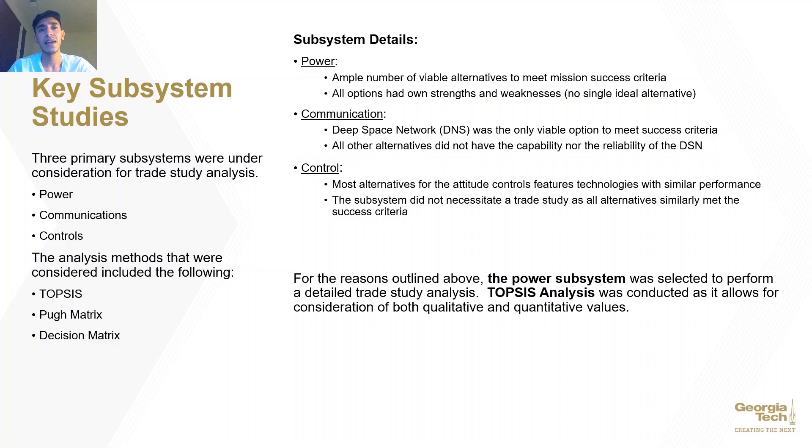Next, the communication system also had a fair number of alternative options. However, the capabilities of the alternatives were still far under the capabilities of the deep space network, and it was clear that the DSN was still the best option. Lastly, the control system dealt with the attitude control thrusters, which, for the most part, features similar capabilities where a trade study analysis would not be necessary. Thus, TOPSYS analysis was performed on the power subsystem. No analysis was performed on the other systems, as the best trade study is one that does not need to be done.